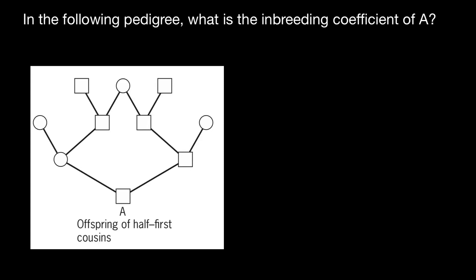Hello, and welcome to Nikolai's genetics lessons. Today's problem is: in the following pedigree, what is the inbreeding coefficient of person A? First, the definition of inbreeding coefficient: it is the probability that person A at any given locus would have two identical alleles inherited from the common ancestor.